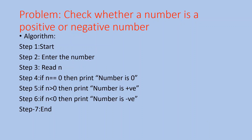Here is an example: check whether a number is a positive or negative number. The first step and last step are start and end. The second step is number entry. Step three: if the number is equal to zero. Step four: the number is positive. Step five: if n is greater than zero, then print 'number is positive.' If n is less than zero, then print 'number is negative.' Last step is end. This is a simple algorithm.